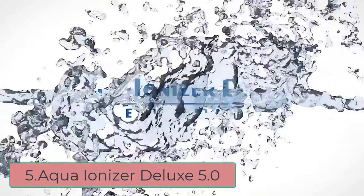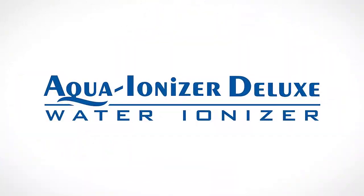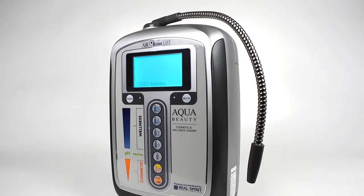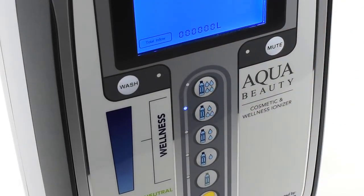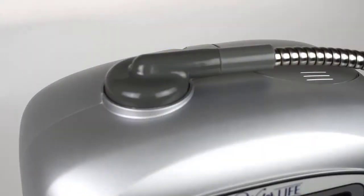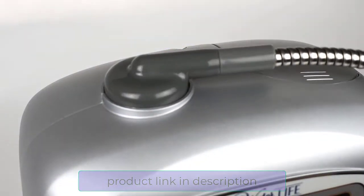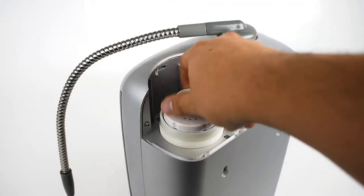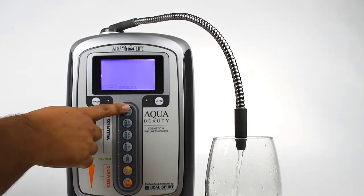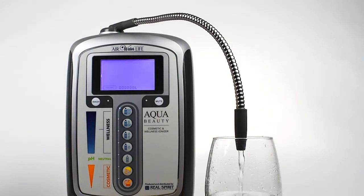At number five, Aqua Ionizer Deluxe 5.0. Even more cost-effective than the Aqua Ionizer Deluxe 9.0 and 7.0 is the baby 5.0. With all the benefits of ionized water with a reduced cost, this water ionizer is environmentally friendly and fiscally responsible. Though the pH and ORP is not as high or low as its siblings, it still gets the job done.